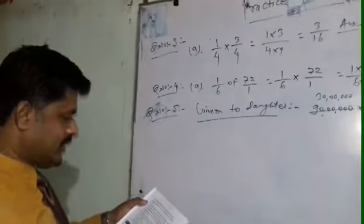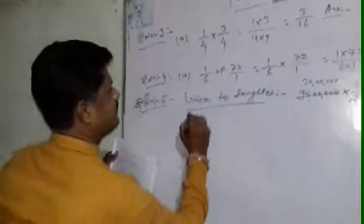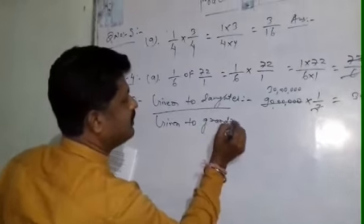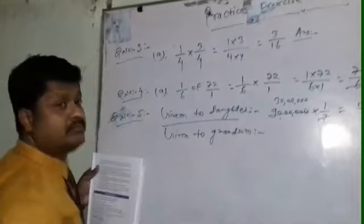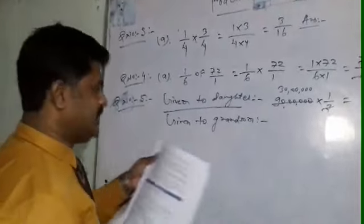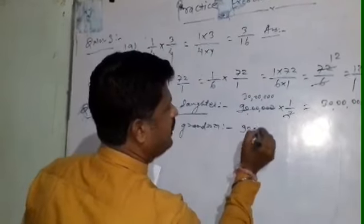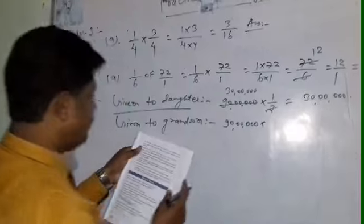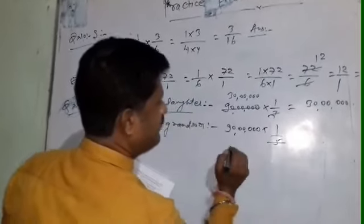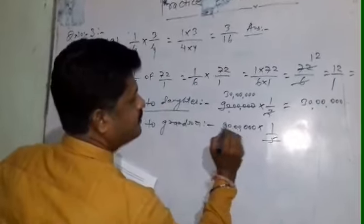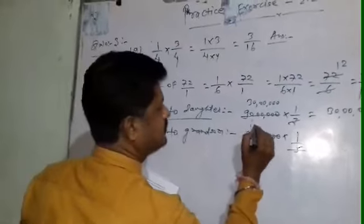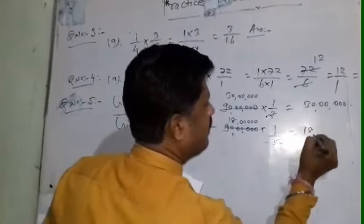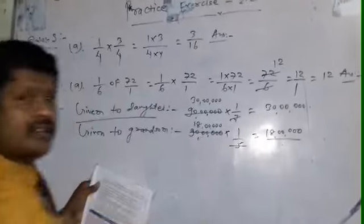Next: the amount given to her grandson. Mrs. Mehra's total money is 90 lakh, and 1 by 5 is given to her grandson. So 1 by 5 of 90 lakh equals 18 lakh rupees given to her grandson.